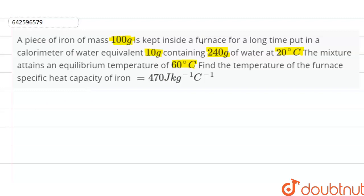When iron is kept in the furnace, it attains the temperature equal to the temperature of furnace. So temperature of iron initially, denoted as Ti of iron, is equal to temperature of furnace.